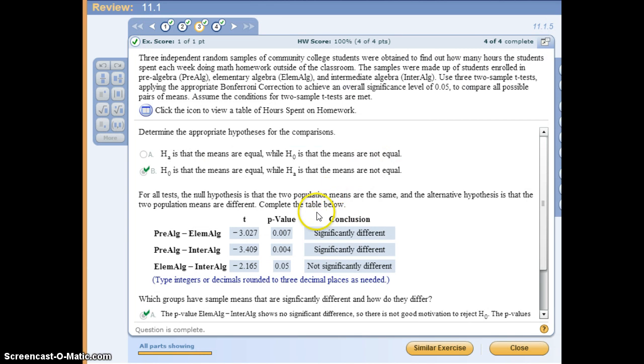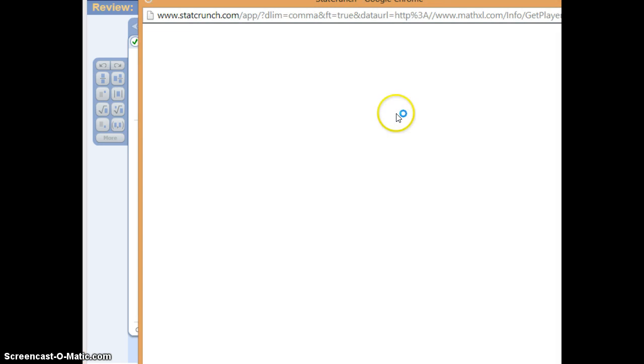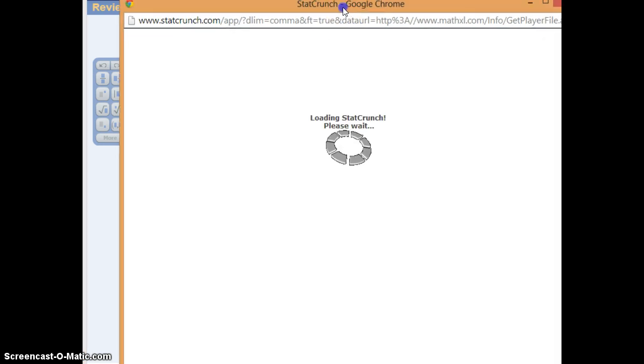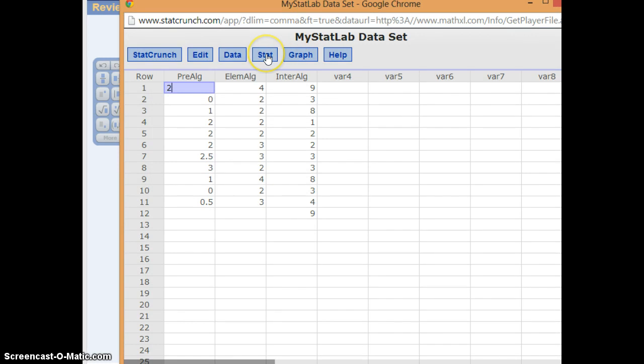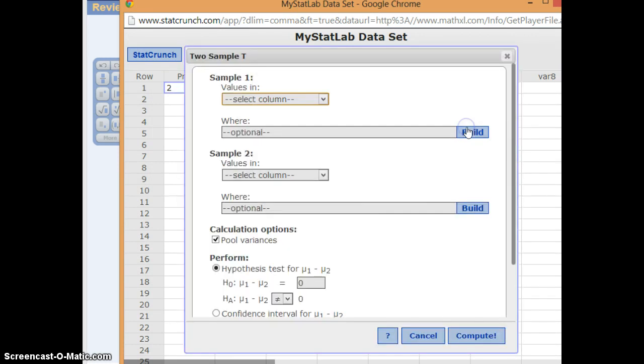Go back to the question. We open the icon here, click StatCrunch. We run the two sample t-test, two sample with data.